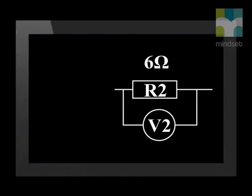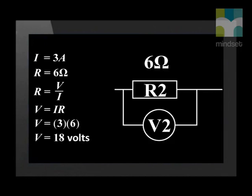Now try to work out what the reading of V2 is — that is the voltage across resistor two. Again, since current is the same in a series circuit, we know that I equals three amperes. The resistance for resistor two is six ohms. When we rearrange the Ohm's law equation and substitute the values that we have, we see that the potential difference across the second resistor is 18 volts.